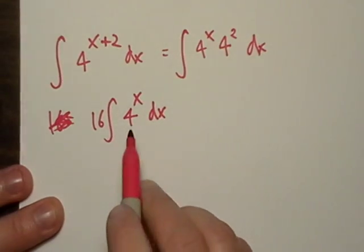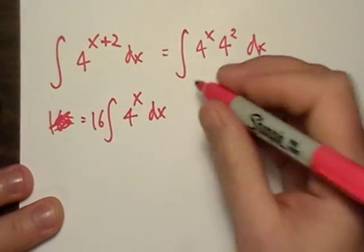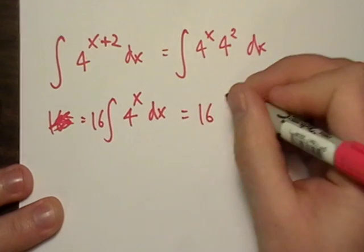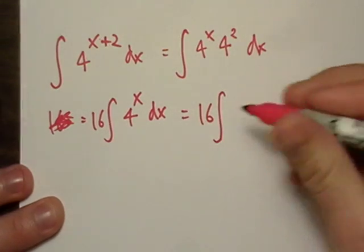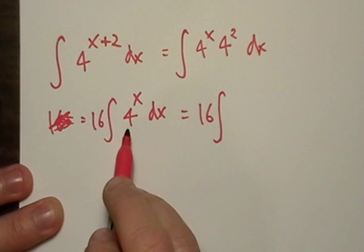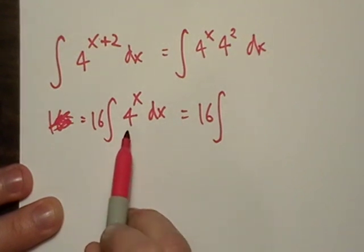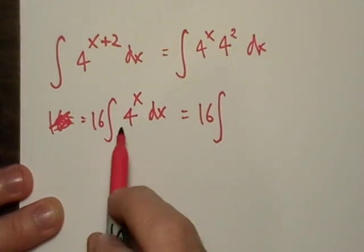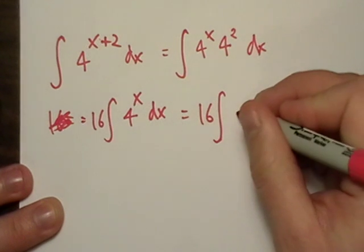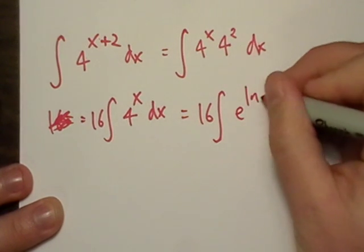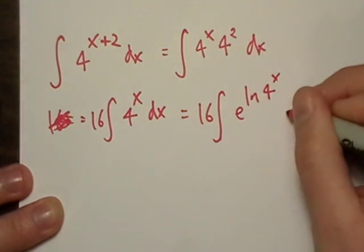Okay, and then we're in this form, and this is really what we're looking for. Reverting back to algebra once again, I've got a video on how to do this in my algebra section, but I can take four raised to the x and rewrite it as e raised to the natural log of four to the x.